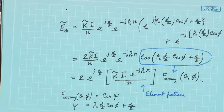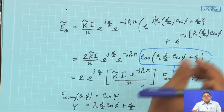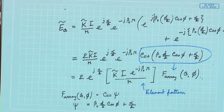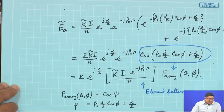The Principle of Pattern Multiplication states that the resultant field of an array of identical elements is the product of the pattern of an individual element and the array factor. This is a general result. We have demonstrated it here for a 2-element array, and will prove it generally for any type of array in this or the next lecture.